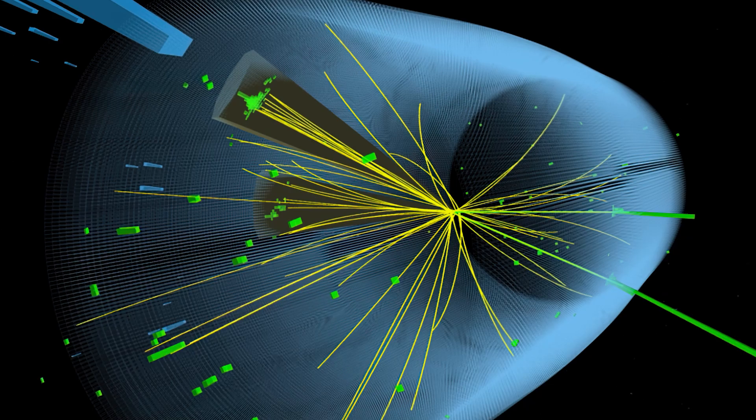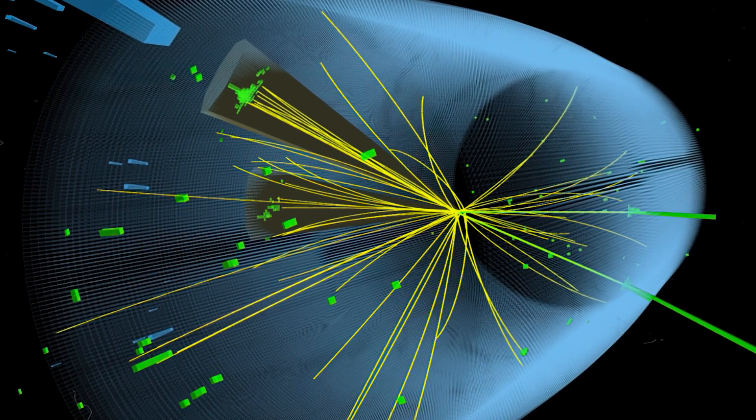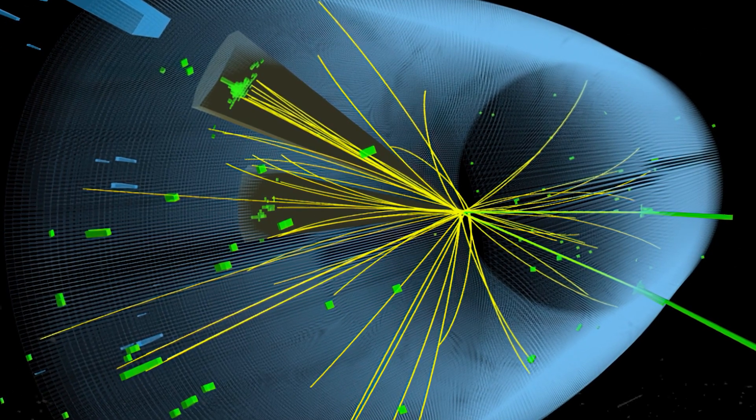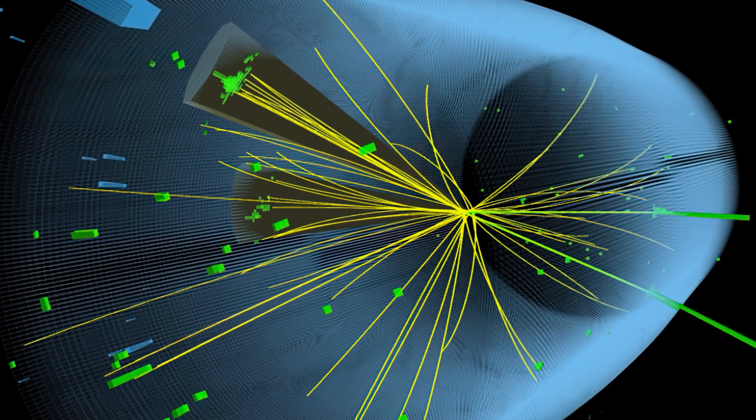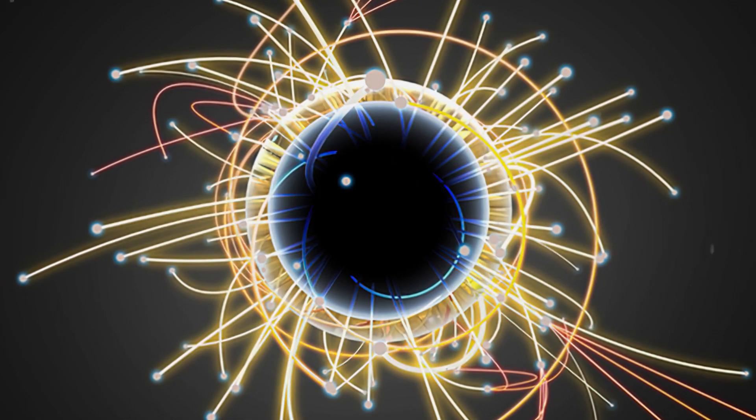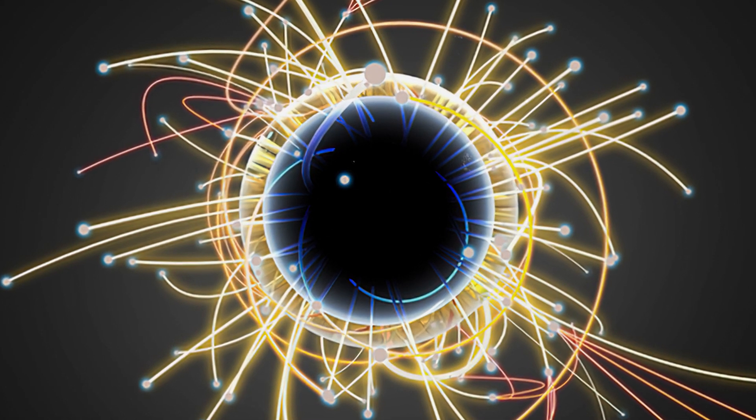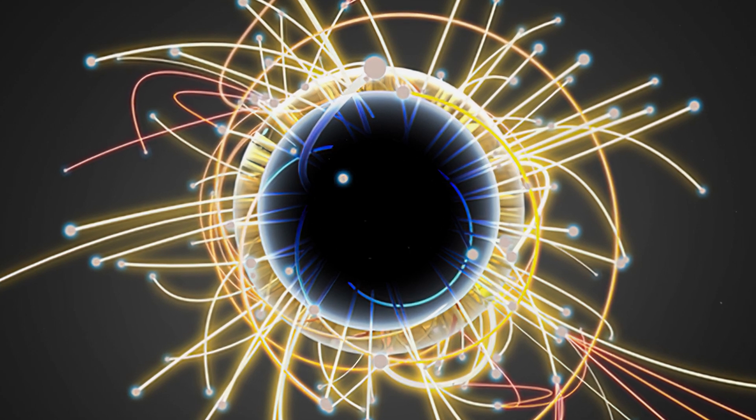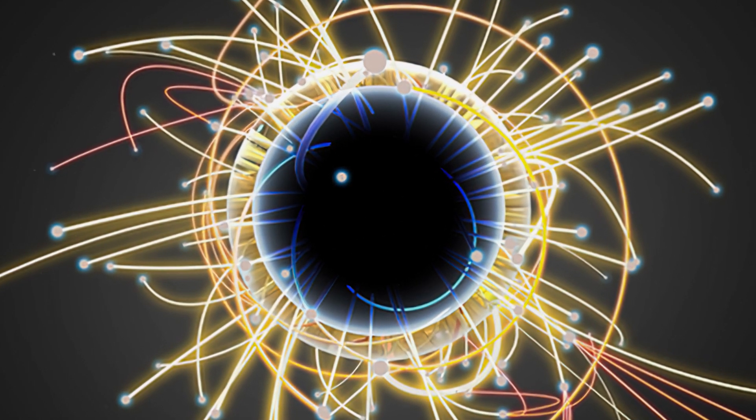Discovering the Higgs boson was just the beginning. In the 10 years since, physicists have examined how strongly it interacts with other particles to see if this matches theoretical predictions. Interaction strength can be measured experimentally by looking at Higgs boson production and decay. The heavier a particle, the more likely the Higgs boson is to decay into or be produced from it. Interaction with tau leptons was discovered in 2016 and interaction with top and bottom quarks in 2018.